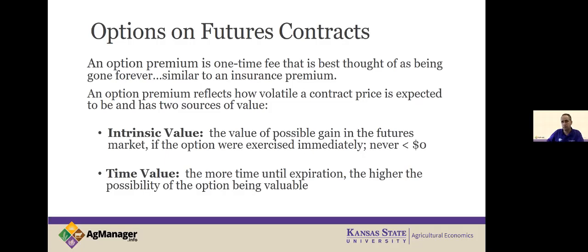What determines option premiums? There are two big categories. The first is intrinsic value — if I exercise that option, what's the profit I could get right now by taking my futures position and offsetting in the current market? Whatever that is will be bid into the premium. If the intrinsic value were higher than the premium, you could just buy options all day and make money, but we can't do that. The second driver is time value.